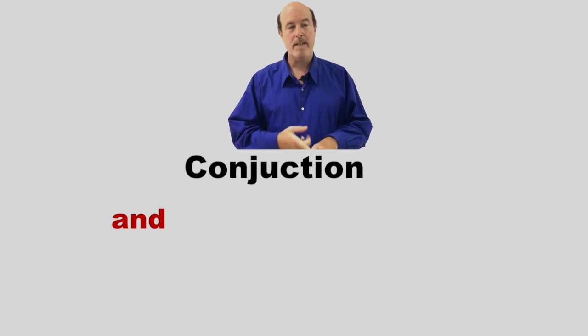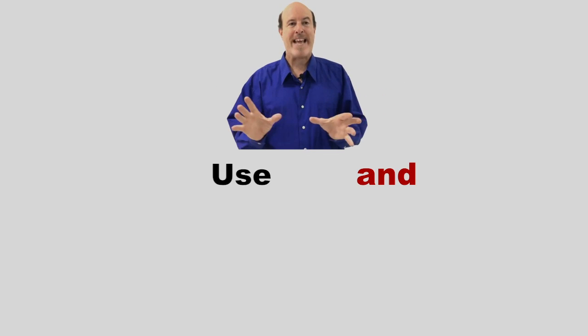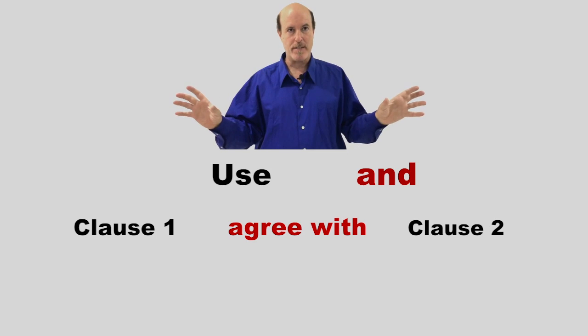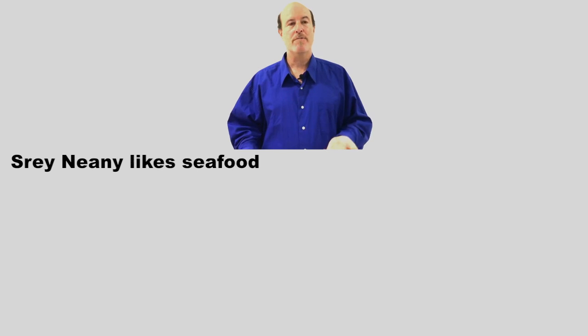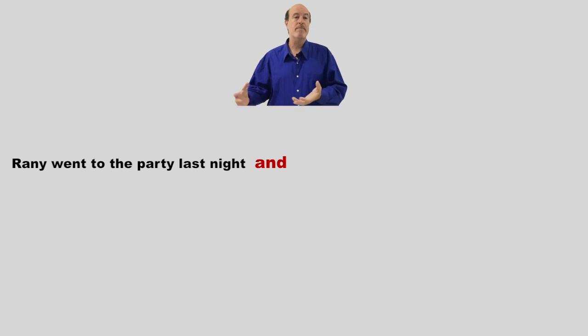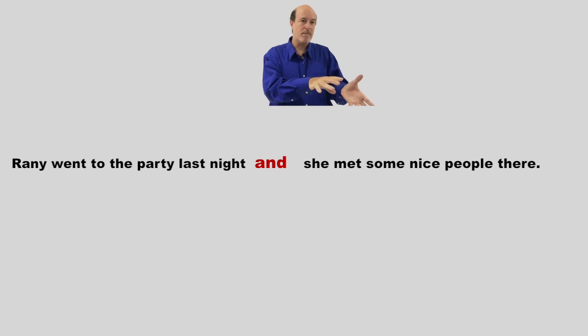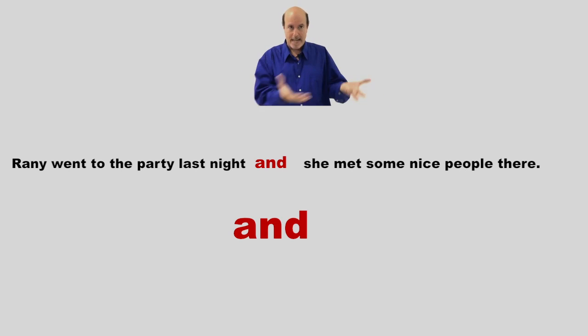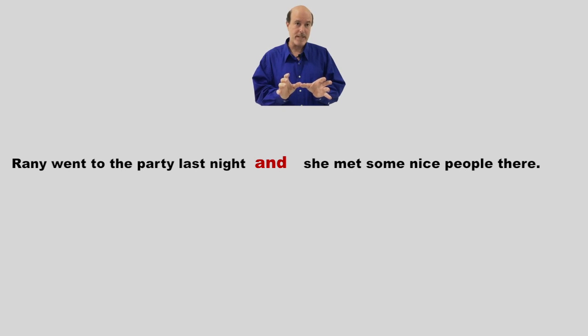Two important conjunctions I want you to learn today are 'and' and 'but.' You use 'and' when the two clauses agree with each other. For example: Sreinian likes seafood and she often eats oysters — liking seafood and eating oysters go together. Another example: Rani went to the party last night and she met some nice people there. They go together — she's at the party, and at the party she met people. So 'and' joins two clauses that agree with each other.